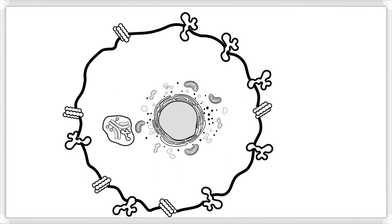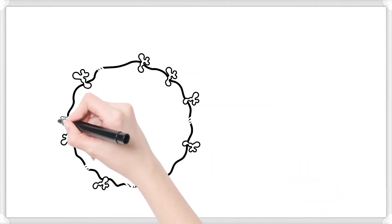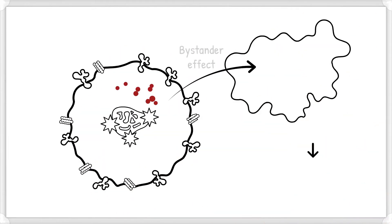This is followed by lysosomal degradation of the ADC and release of the cytotoxic agent into the cytoplasm. The released cytotoxic agent can penetrate the cell membrane and enter neighboring cancer cells leading to cell death. Finally, the cytotoxic agent results in cell death in the target cancer cell as well.